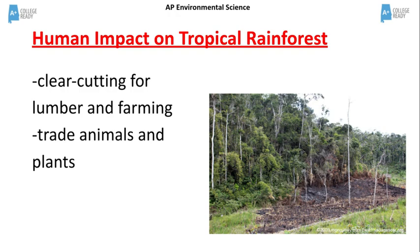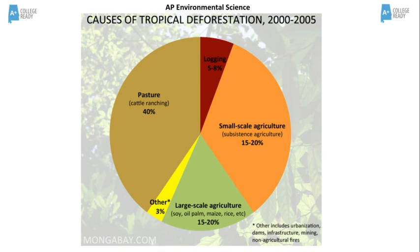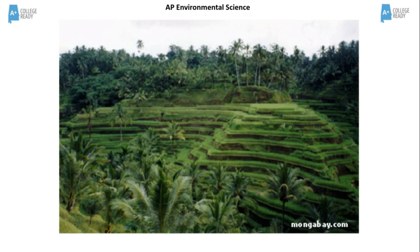Human impact on the tropical rainforest includes clear cutting for lumber and farming, and the trade in animals and plants. This graphic shows causes of tropical deforestation between 2000 and 2005. Using the land for cattle ranching and subsistence farming are the main causes. This picture shows an area in a tropical rainforest that was cleared of trees and then terraced for agricultural purposes.